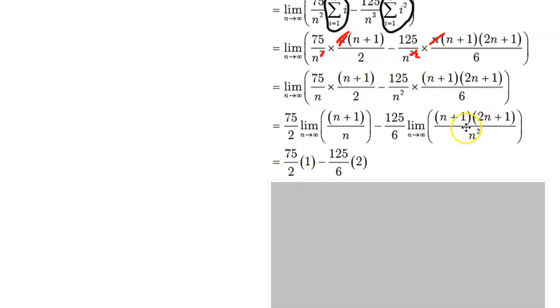The limit over here is easy to detect as well, because if you were to expand the numerator, you would get 2n squared. Now 2n squared over n squared would give you 2, with a little bit left over, but as those numbers get larger and larger, the little bit left over would actually be negligible. So this is what we end up with: 75 over 2 times 1 minus 125 over 6 times 2, and we end up with negative 25 over 6 as our final answer.